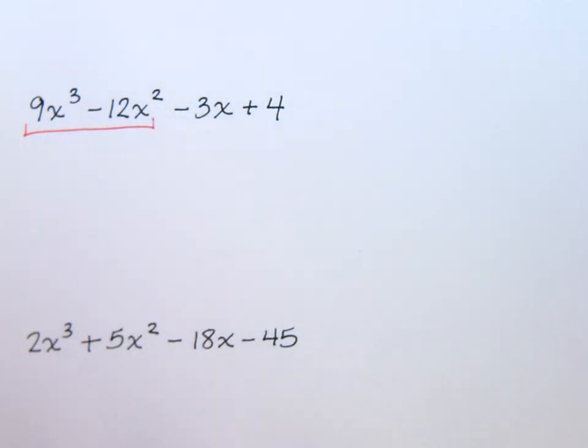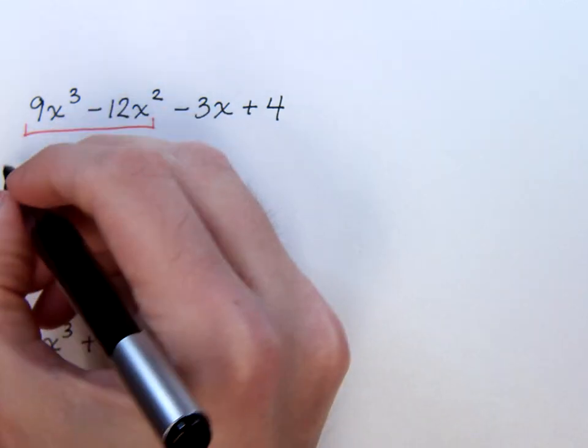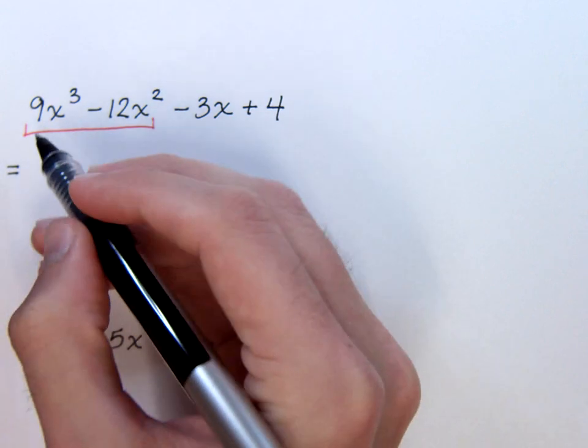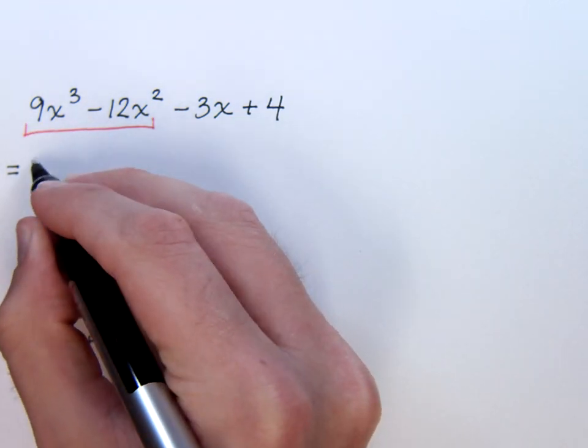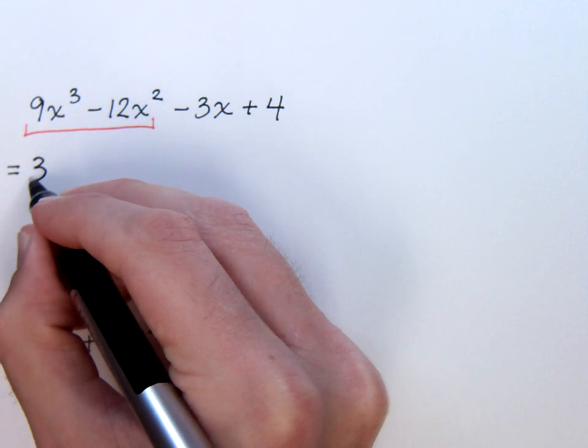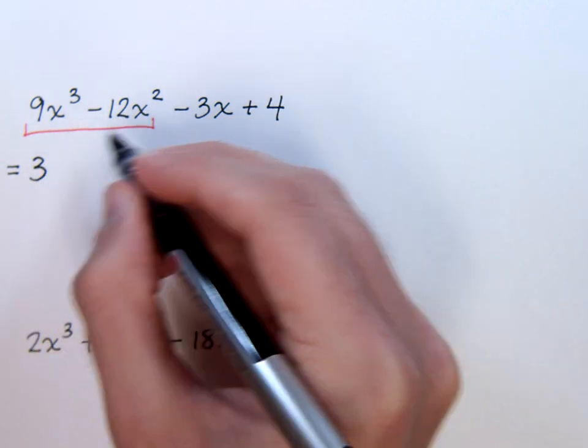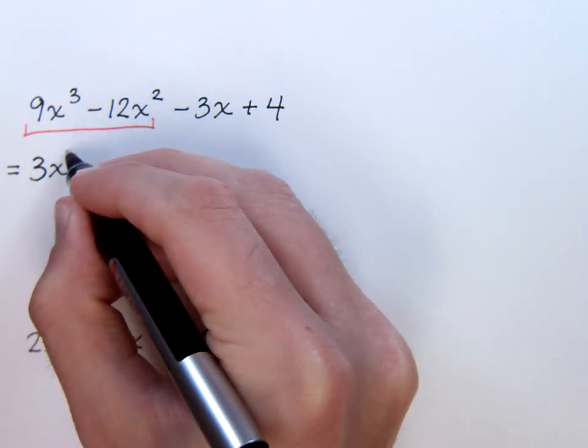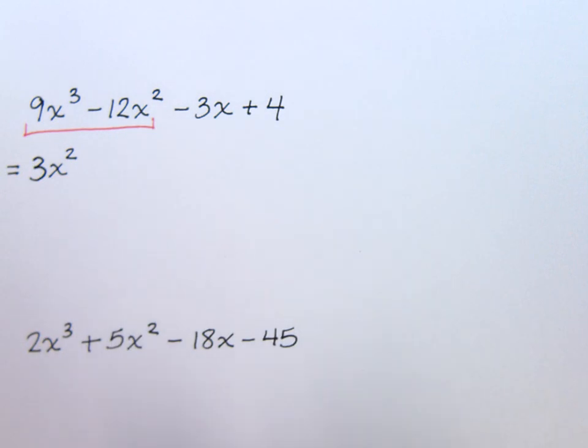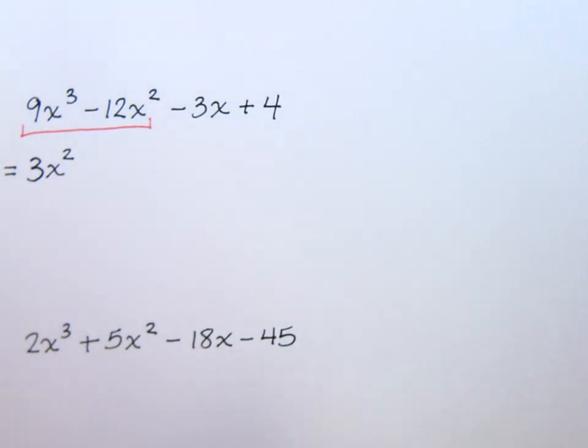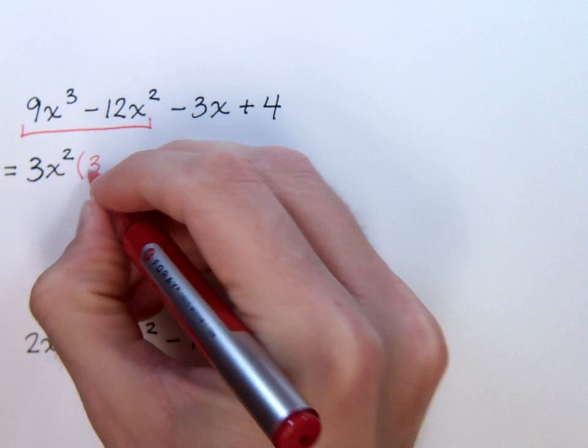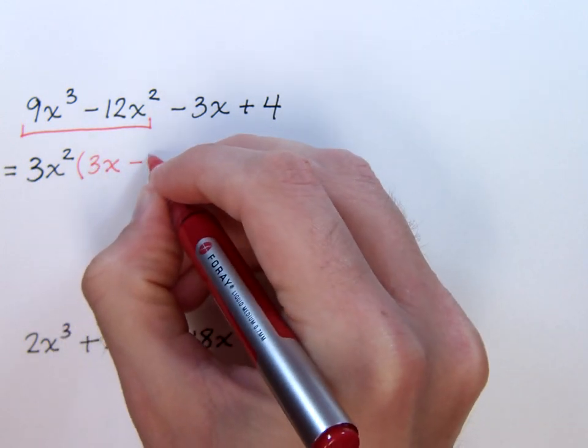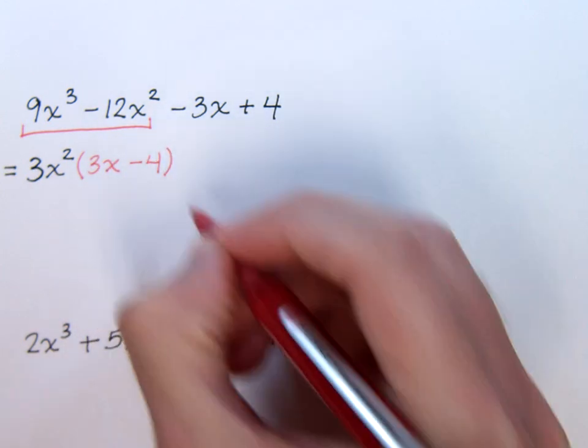If we look in this first group, what's the greatest common factor? Between the nine and the twelve, the common factor is three. We look at the variables, we know that we can take x squared out of each of these guys, so that's what we're going to do. We take out three x squared, and then we're going to be left with three x minus four.